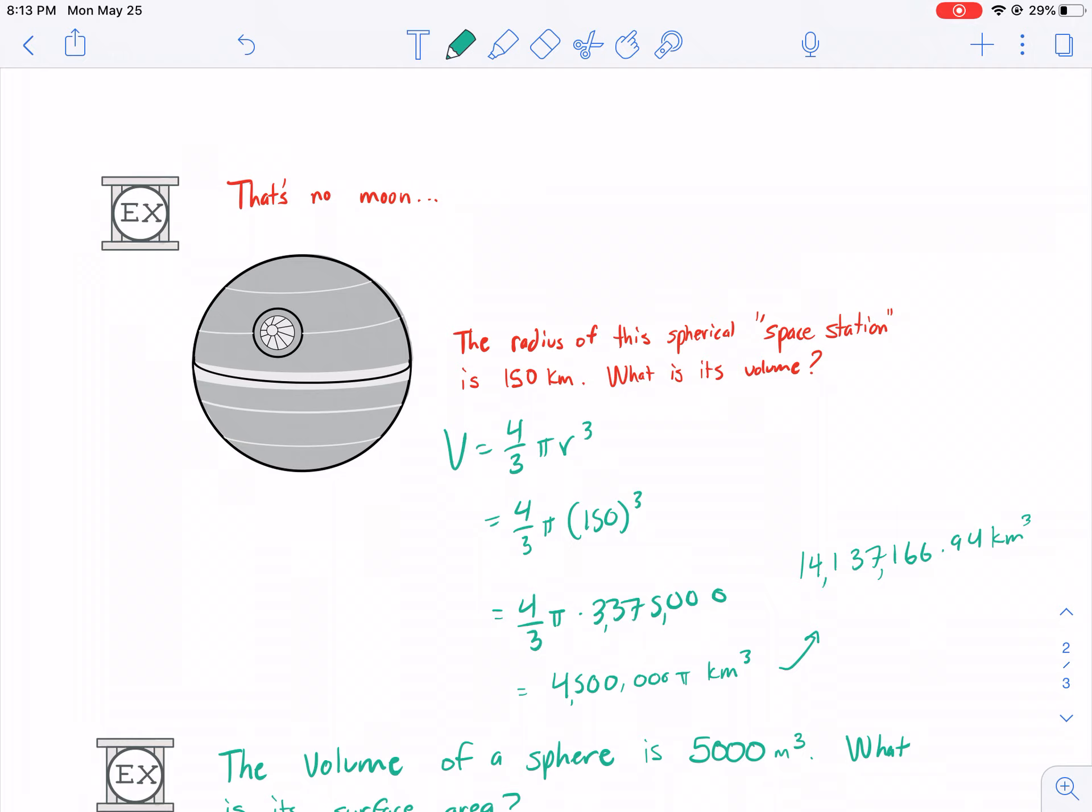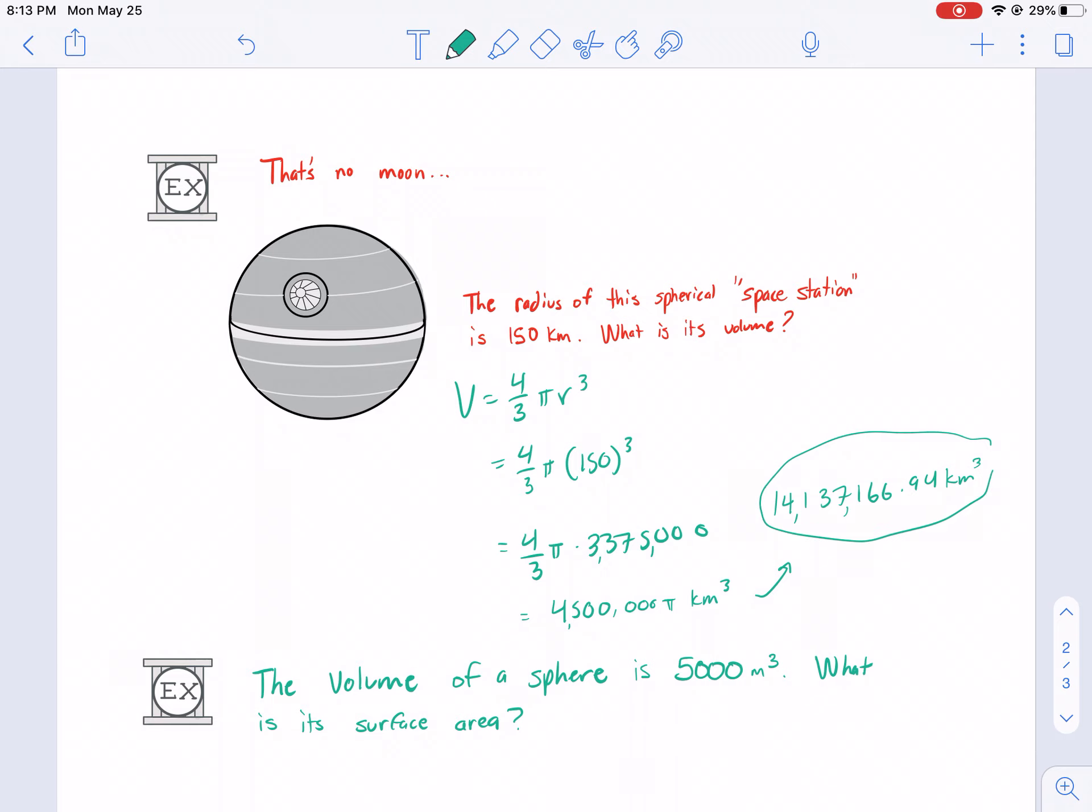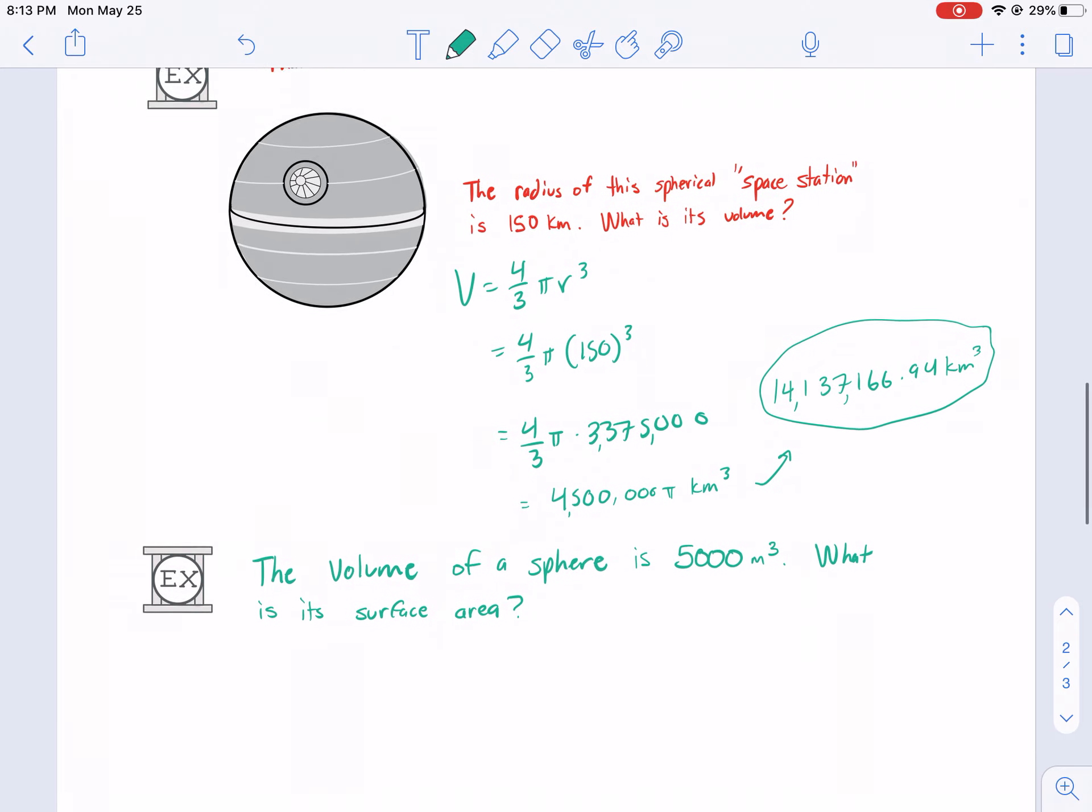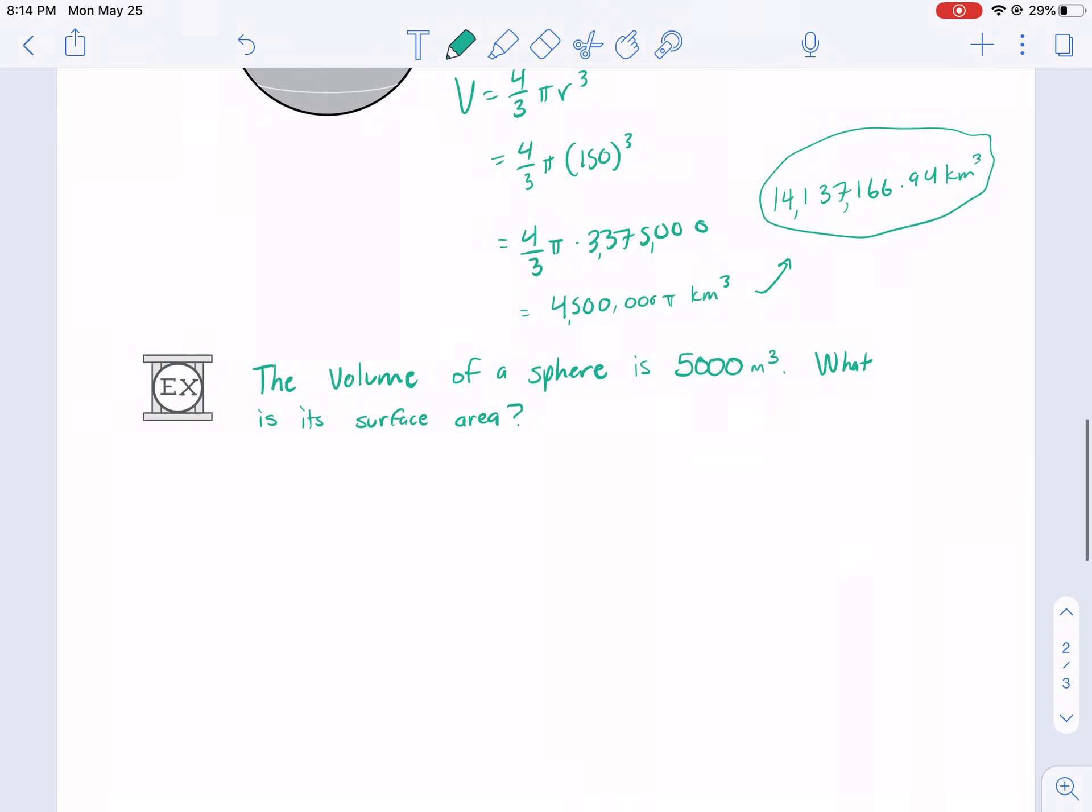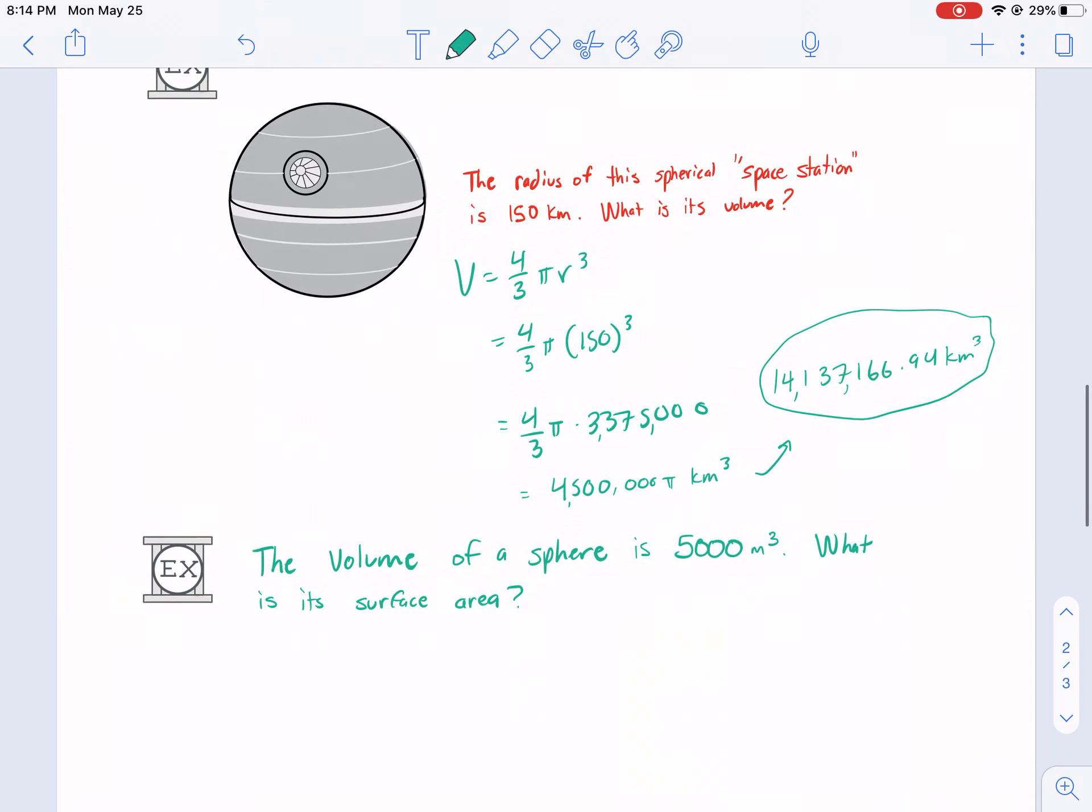So, about 14 million cubic kilometers. That is absolutely massive. That is humongous. Definitely bigger than anything here on Earth. So, that is pretty impressive that it can hold that much space, that much stuff. Space, no. I guess that is a good name for it then, a space station.